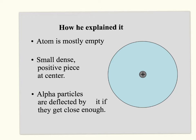Rutherford explained that the atom was mostly empty, and there was a small, dense, positive piece in the center — what we know as the nucleus. Alpha particles were deflected by it if they got close enough; most passed through, but those that got really close turned around, which is how they were deflected and bouncing all over the place.